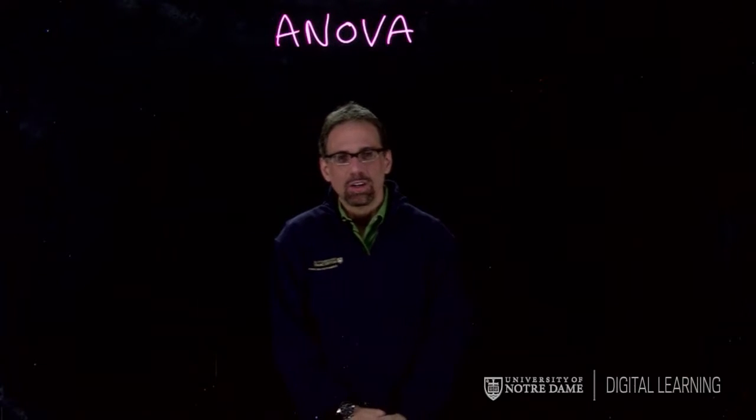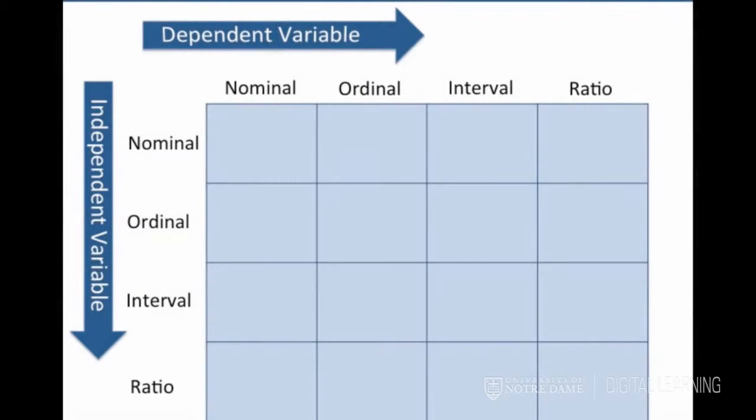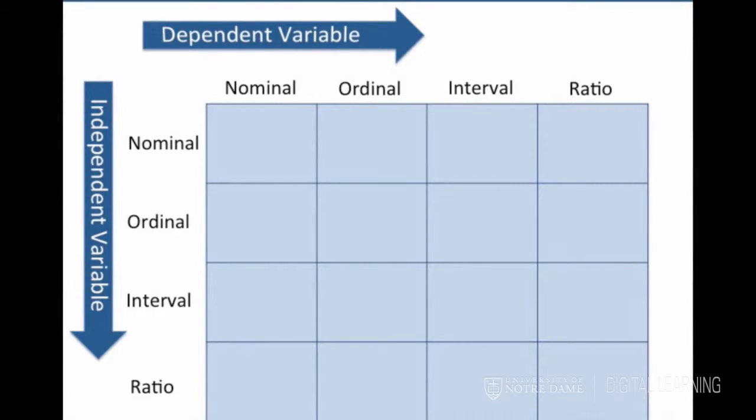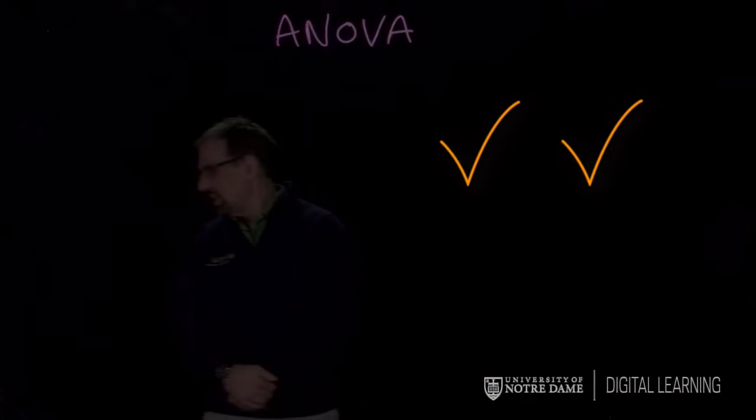If you go back to your chart for the course, you'll see we're in the same territory as we were with the t-test, because we have categorical, nominal-level independent variables and we have quantitative or interval-slash-ratio-level dependent variables. So we have that same kind of setup, but this time we can have more than two. We can have three or more in this kind of setup.